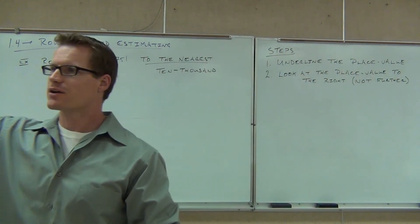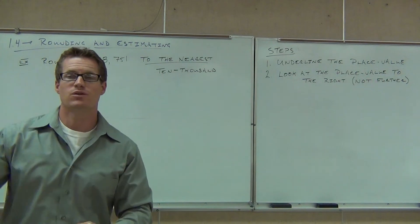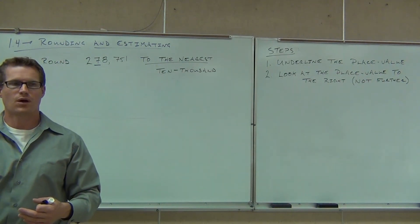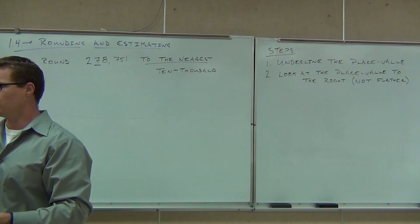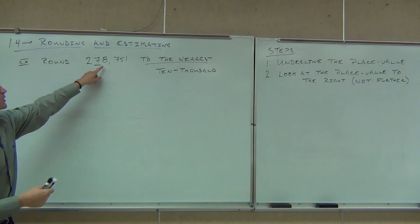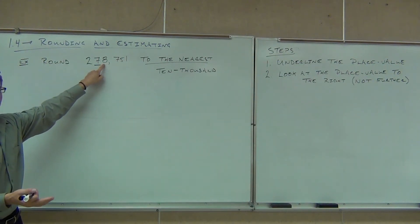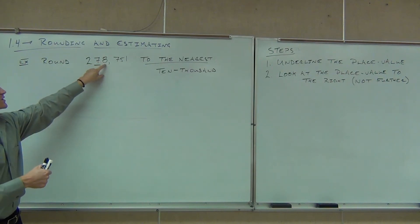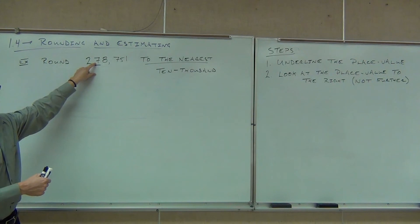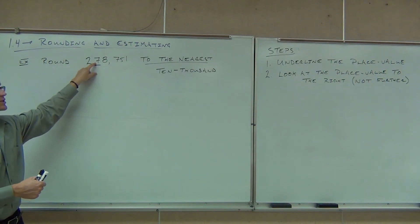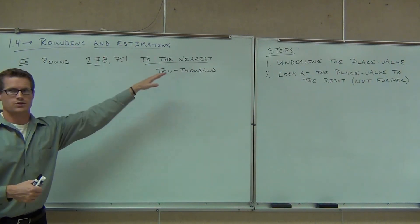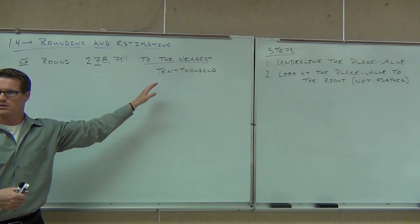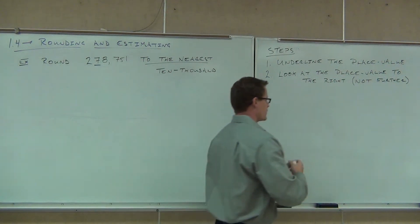We look at that place value to the right and compare it to the number 5. If it's 5 or higher, we're going to round the place value up. If it's lower than 5 — that's 0, 1, 2, 3, or 4 — we're going to leave that place value alone. If it's 5 or more, we raise our place value up by 1. If it's less than 5, we leave it alone. In either case, we follow this place value with all zeros — no more numbers after that.